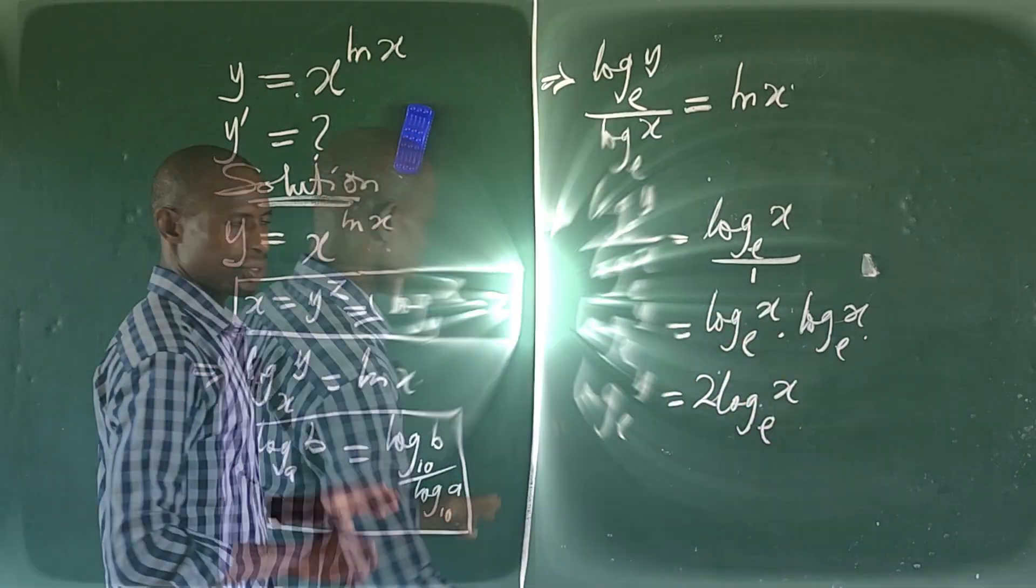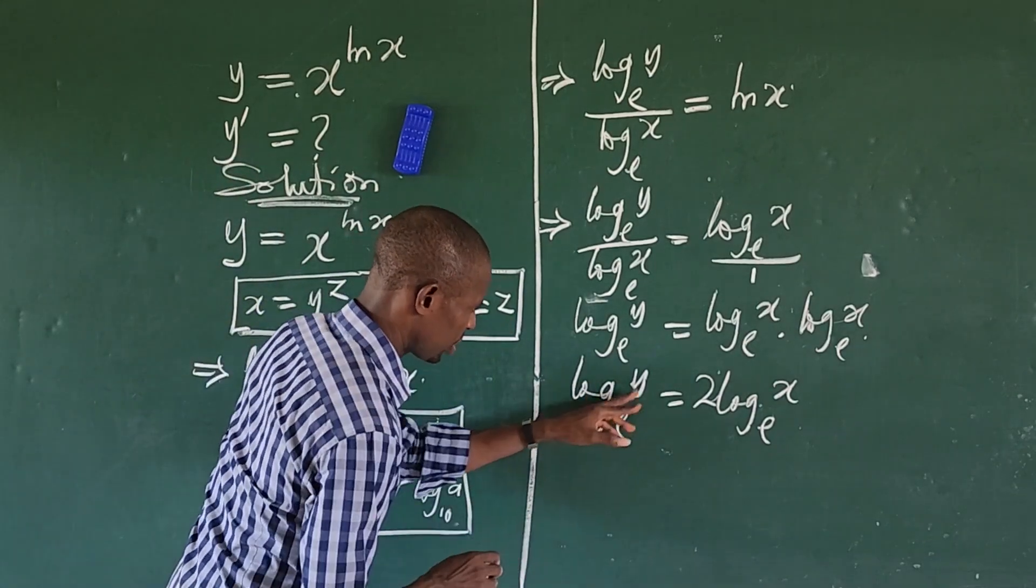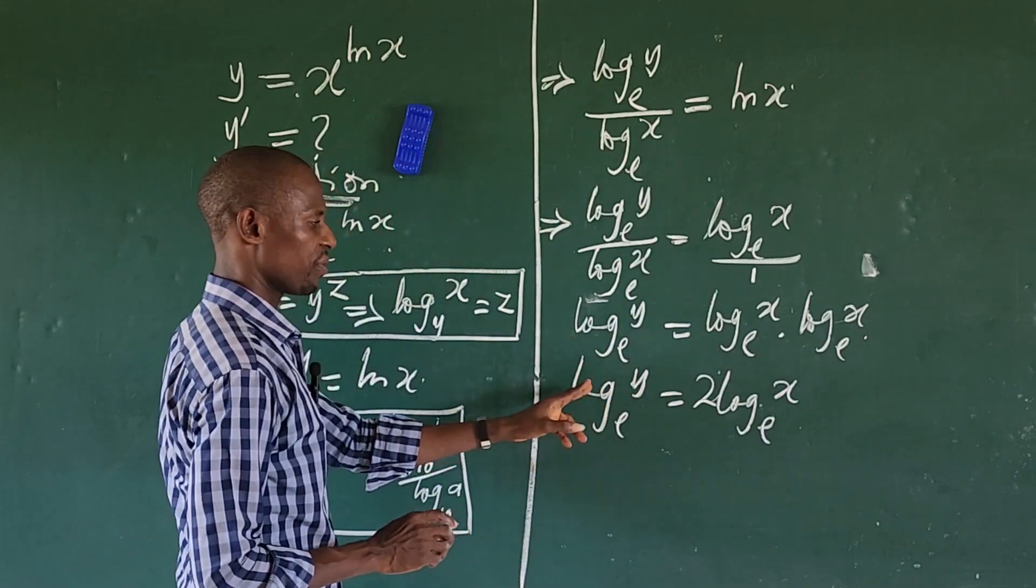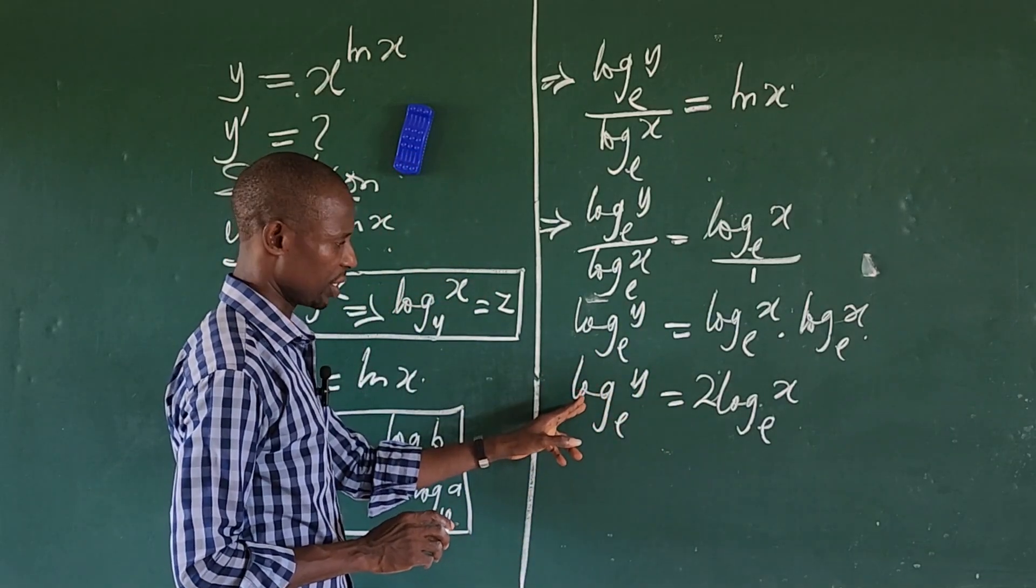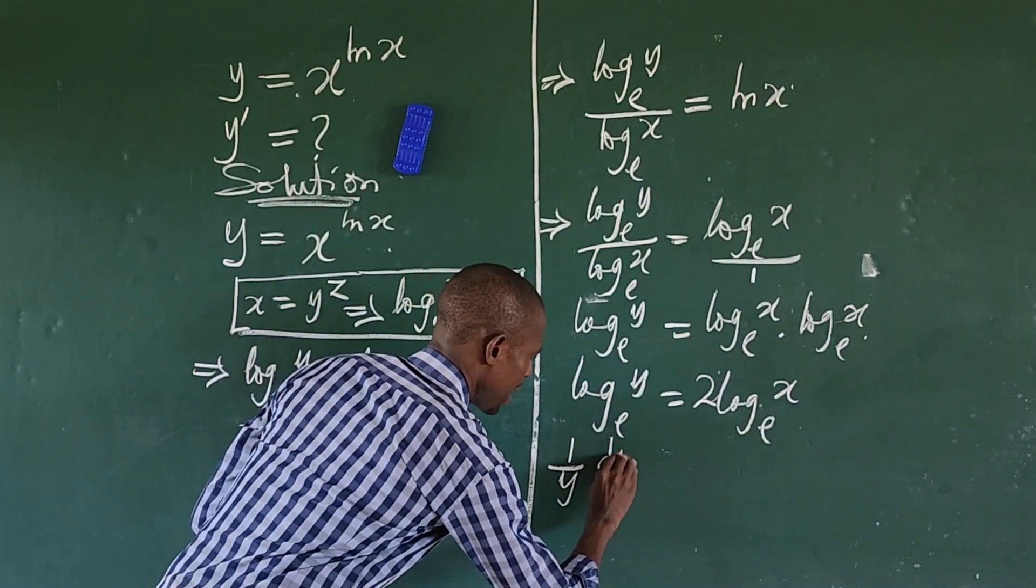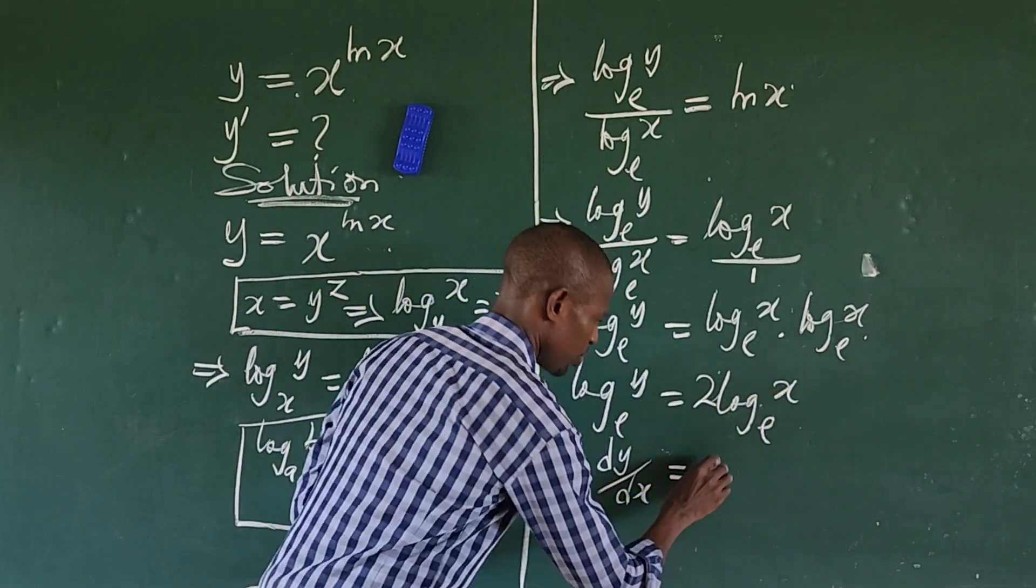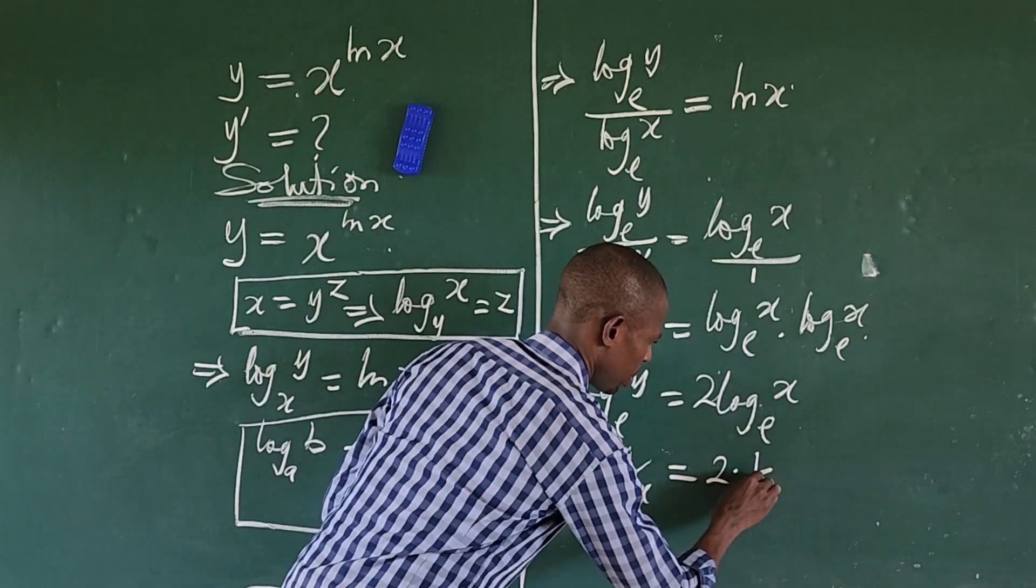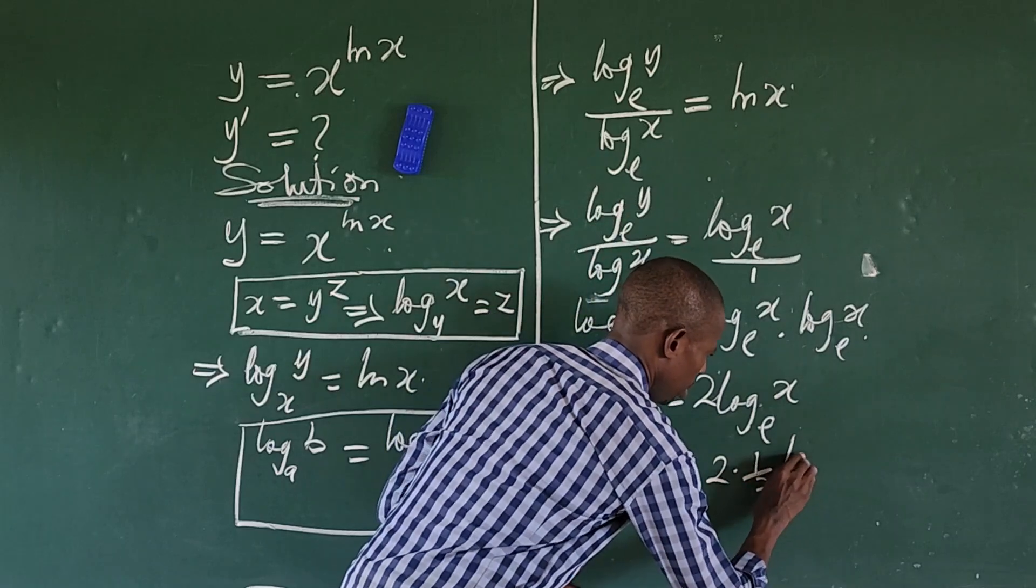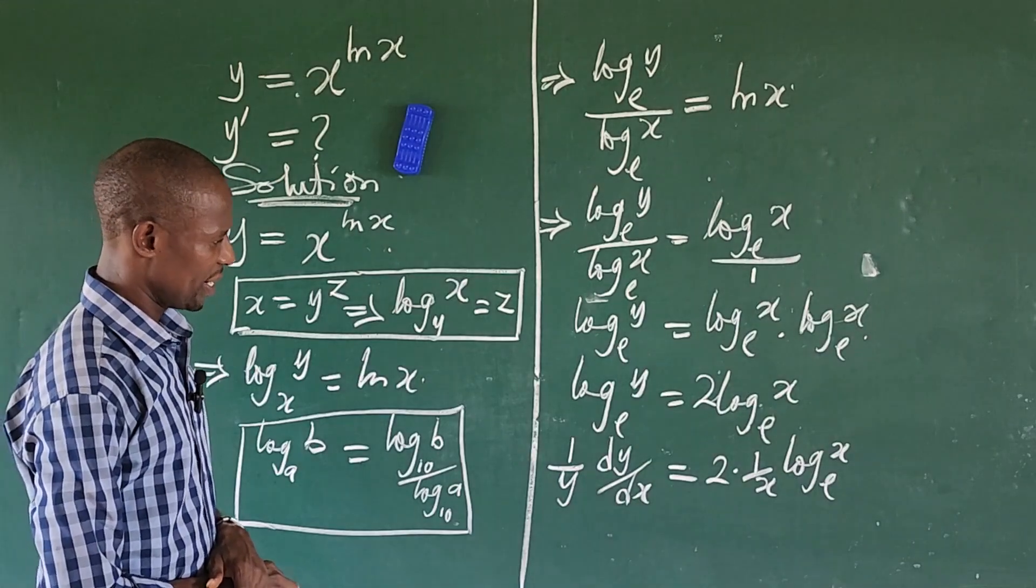I want to differentiate this function with respect to x. So we're going to have here, if you differentiate this with respect to x, this is going to give us an implicit differentiation. That will now give us here one over y times dy/dx equals, if you differentiate this, this will give us two times one over x times log x base e.